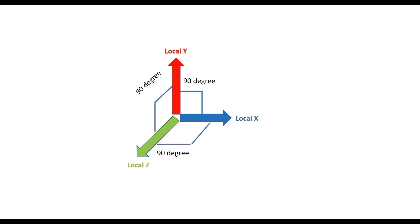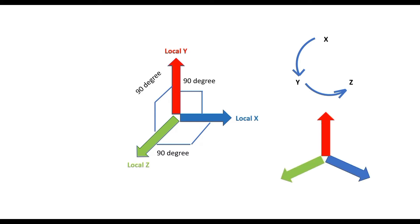If we know the direction of two axes, we can locate the direction of the third axis using the right-hand thumb rule or the cross product of the vectors. Note that when we mention the direction of an axis, we mean the positive direction. The cross product of the local x vector with the local y vector gives the local z vector. So if the blue vector is local x, the red vector is local y, and the green vector is local z — curling the fingers of the right hand from local x to local y, the thumb points toward local z.